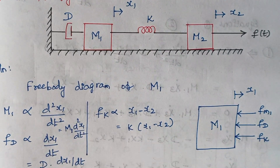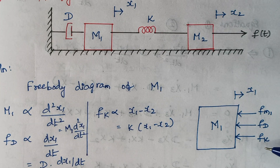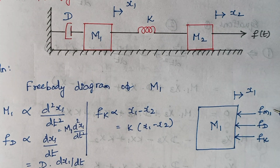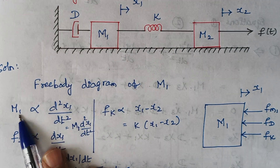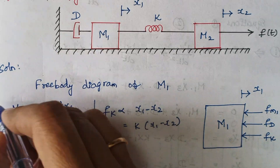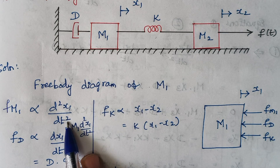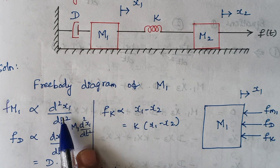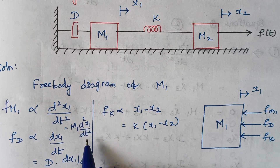First draw the free body diagram — these three are the opposing forces. Now we are going to write the expression for each and every term. First consider fm1: the opposing force contributed by fm1 is directly proportional to d²x1/dt². When you introduce the proportionality constant, it is m1 × d²x1/dt².